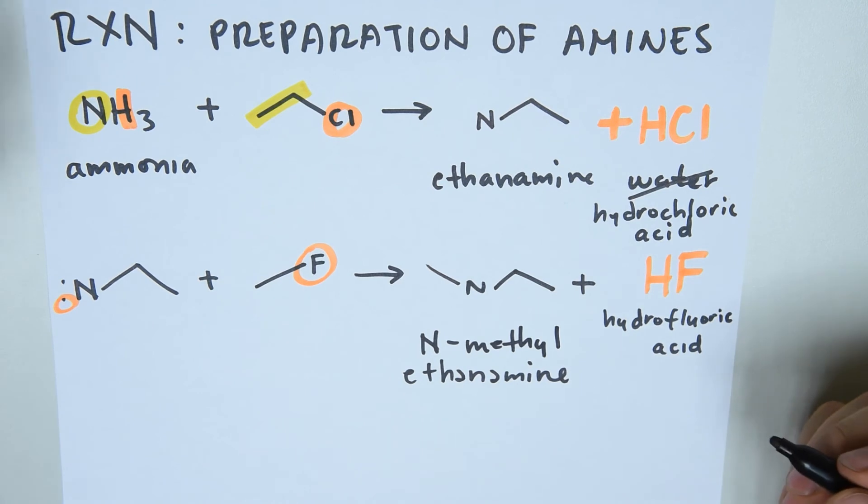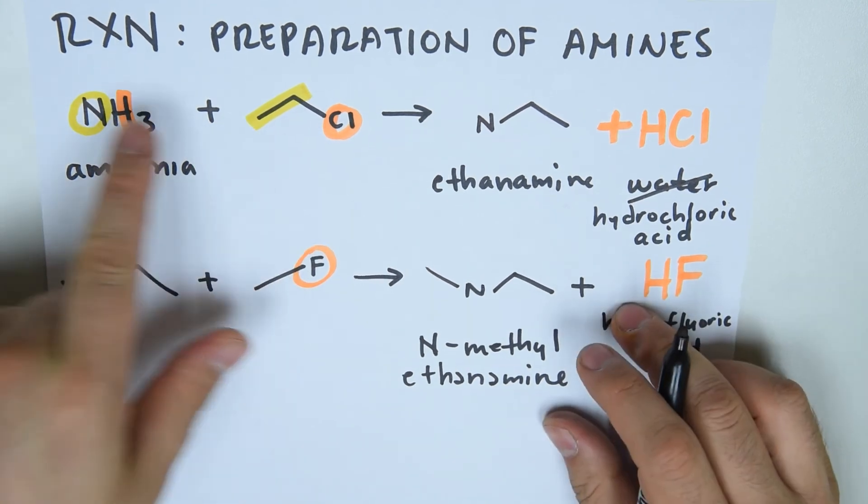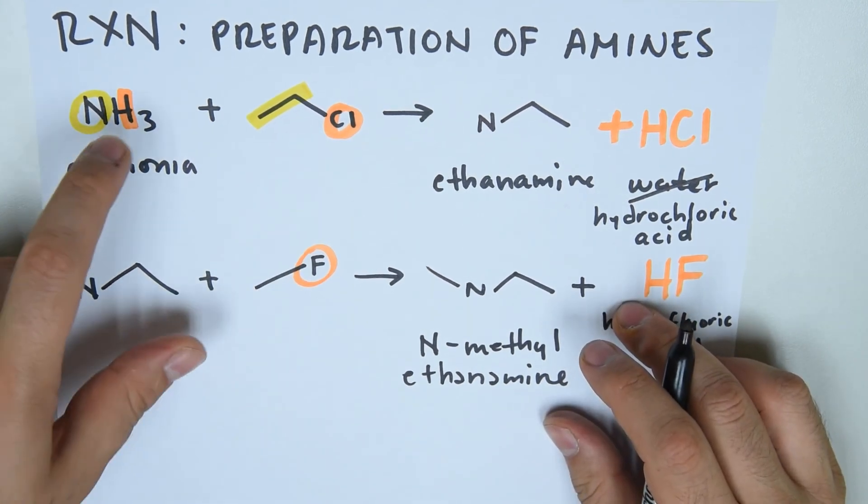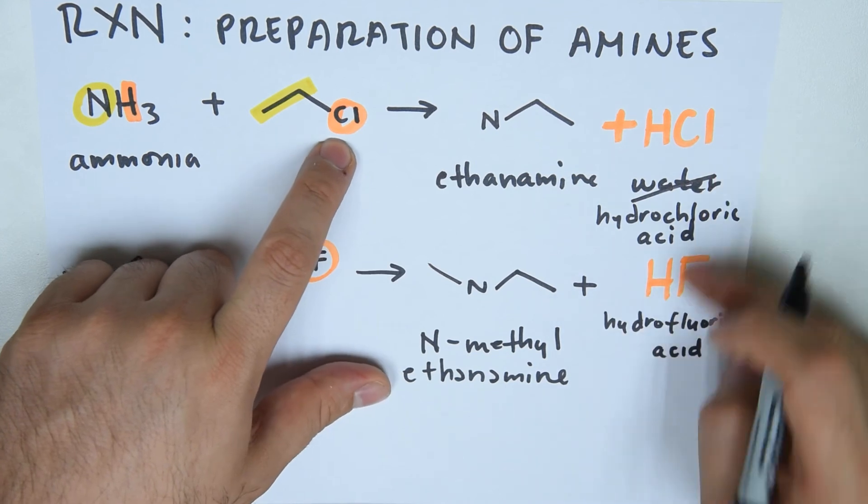And it's very simple. So again, the carbon chain joins the nitrogen. The hydrogen goes with the halogen to form the acid.